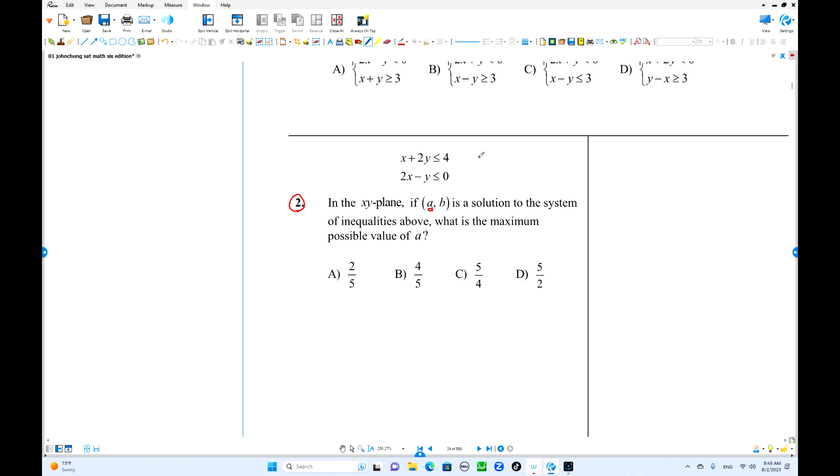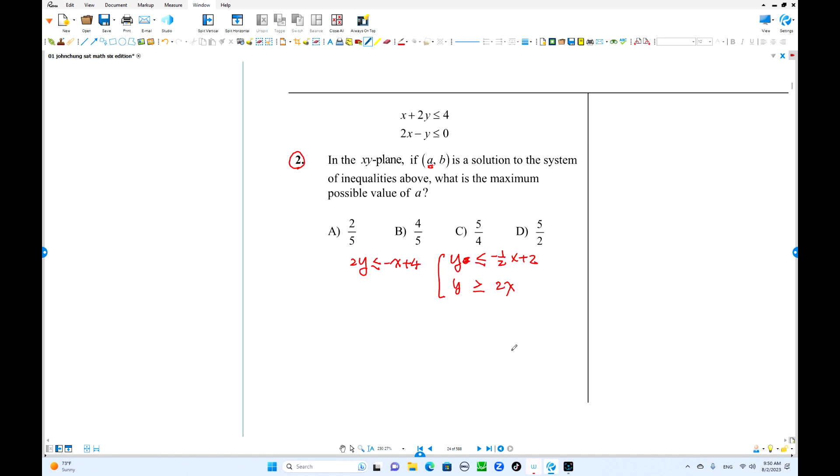You can solve this one. If this is 2y less than or equals negative x plus 4, so y equals negative 1 over 2x plus 2. Second one is y is greater than or equals 2x. I find out the intersections because the graph looks like this one. Negative 1 over 2x plus 2 graph is here. The other graph is y equals 2x here. This is less than, the other one is greater than or equal to, this solution set, right?